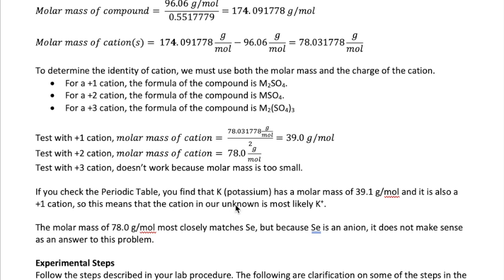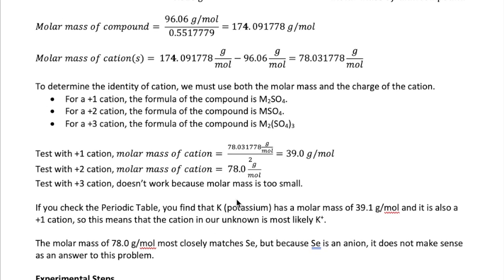Now, if we go to the periodic table, we find that potassium ion has a molar mass of 39.1 grams per mole and it is also a group 1 cation. So, it must be the answer that we're looking for. To confirm, if we try to find an element with molar mass of 78.0 grams per mole, the closest is selenium, but selenium is an anion, not a cation, so it wouldn't make sense as an answer to this problem. So, that's how you use the concept of percent composition and mass data to determine the identity of your unknown cation. In the next video, I will go through the experimental steps that you must perform for a successful reaction.